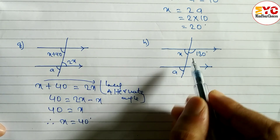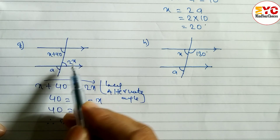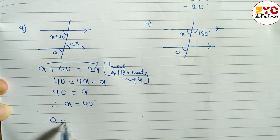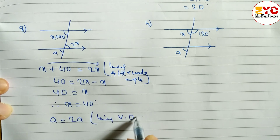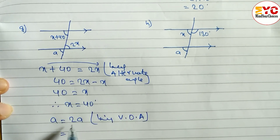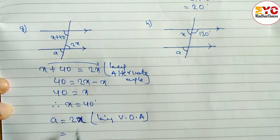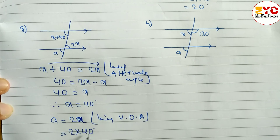Now we have to find the value of a. We can write a = 2x, reason: being vertically opposite angles. So a = 2 × 40 = 80 degrees. Therefore the value of a is 80 degrees and the value of x is 40 degrees.